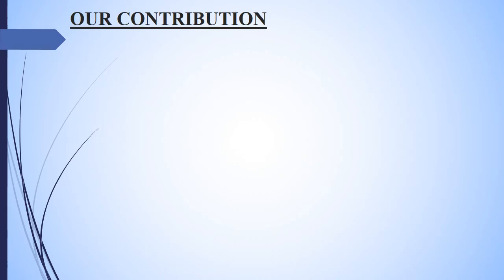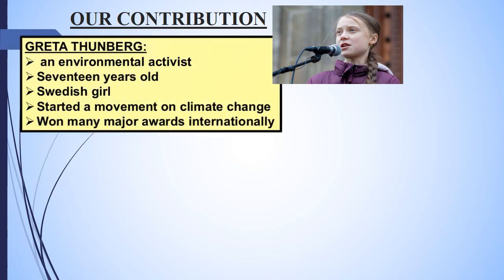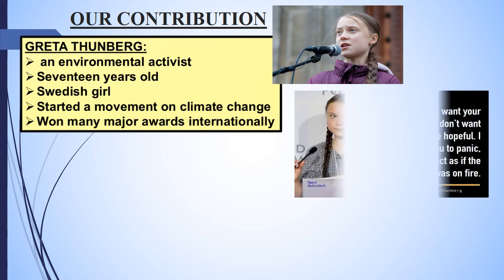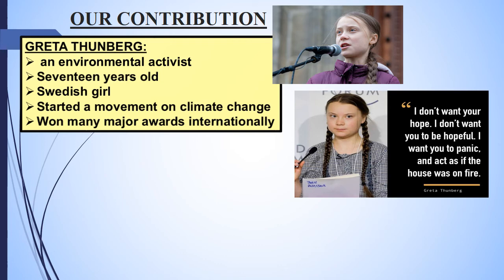There are many people who have contributed to spreading awareness about climate change, and one of them is Greta Thunberg. She is an environmental activist, 17 years old, and a Swedish girl who started a movement on climate change and won many international awards. One of her famous quotes is: 'I don't want your hope. I don't want you to be hopeful. I want you to panic and act as if the house was on fire.'